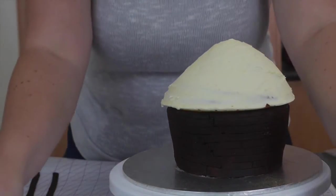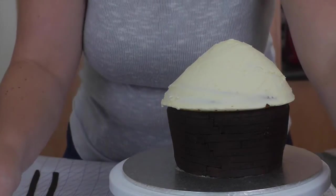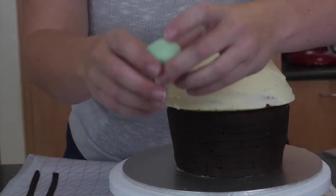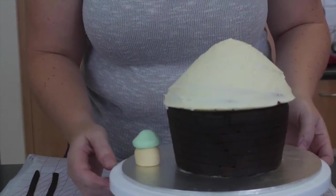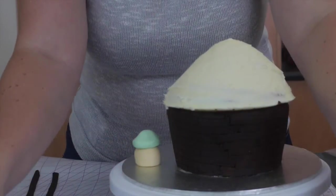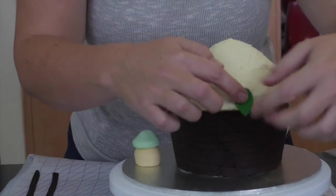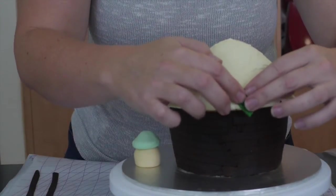And once I am happy with my positioning, it is time to put on our leaves. So simply bringing over all the leaves that we cut out earlier, or you know after we put our toadstool on the cake board, we are going to get our leaves and we are simply going to place them on starting at the bottom.